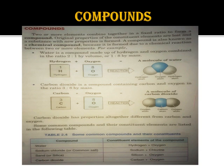In water, hydrogen and oxygen combine in the ratio 1:8 by mass - meaning one gram of hydrogen combines with eight grams of oxygen. Mass is the amount of matter and is measured in grams. It is different from weight because mass is not affected by gravity, while weight is.